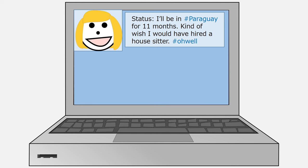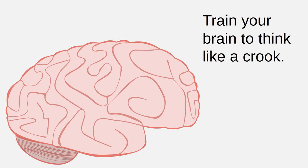Your physical location is an important piece of security information, so be thoughtful about what you reveal about your location online. Of course, the whole point of social media is to share information with other people, so you're obviously not going to withhold absolutely everything about yourself. But you should train your brain to think like a crook — before you post information on social media, consider how that information could be used against you.